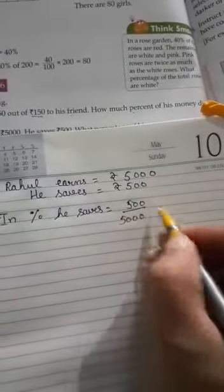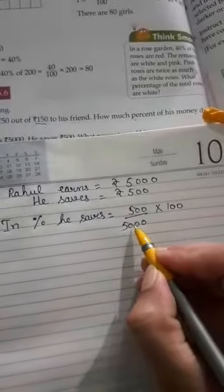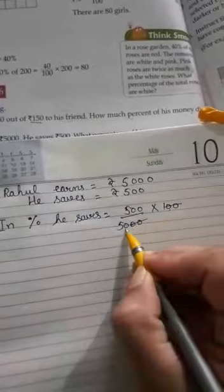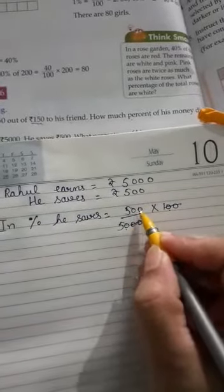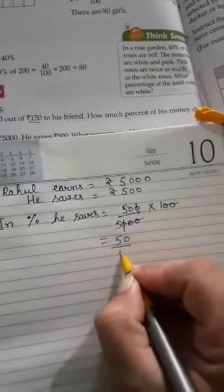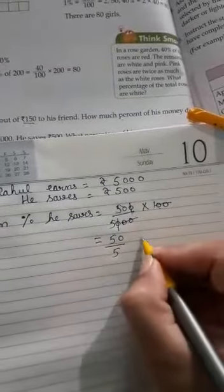Multiply with 100. Two zeros in the numerator, two zeros in the denominator, we can cut them. One zero left in the numerator. Two zeros given, one zero cut with this zero. In the numerator we have 50, denominator is 5 left. When you divide.